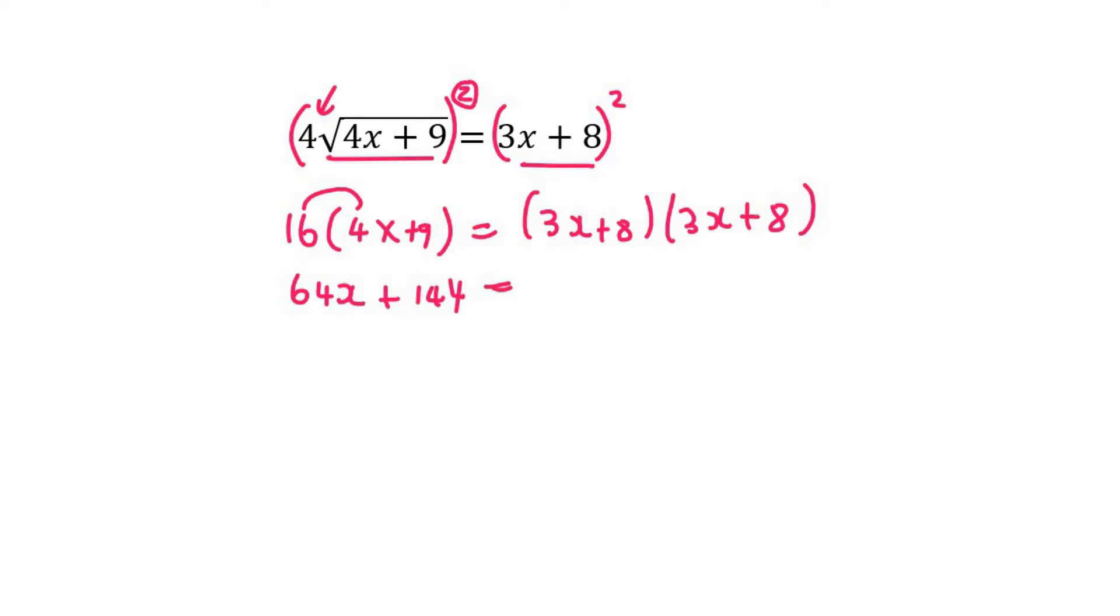And then you multiply the brackets out. So that's going to be 9x squared plus 24x plus 24x plus 64.